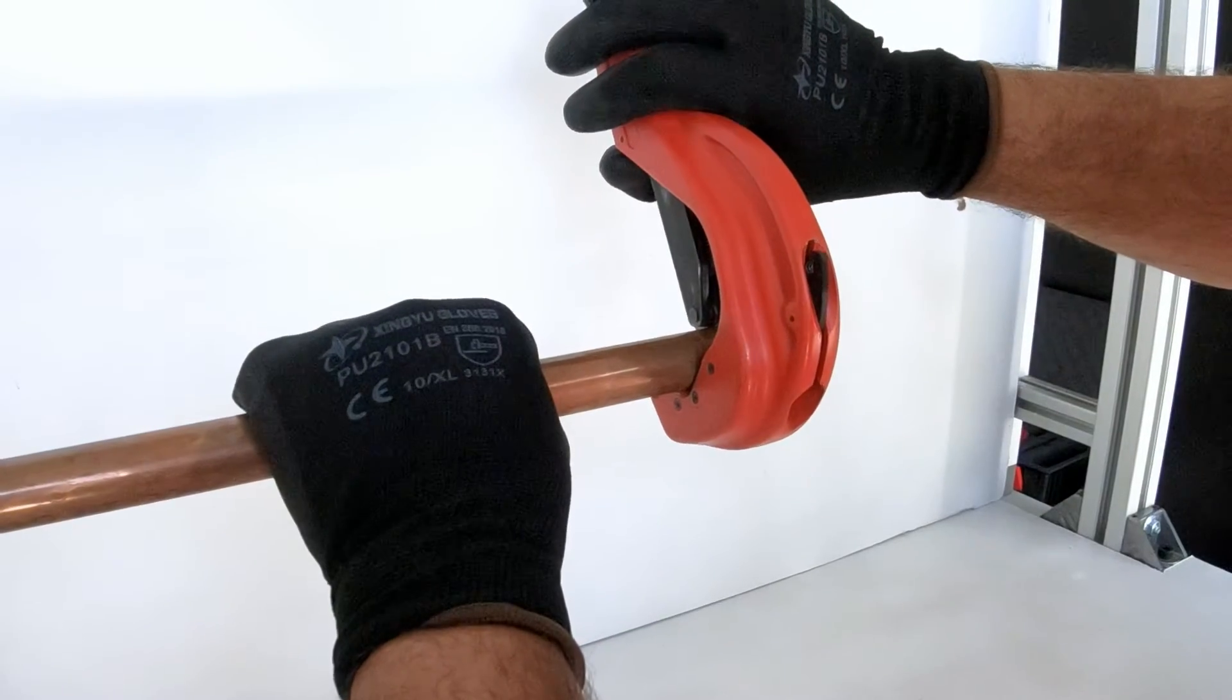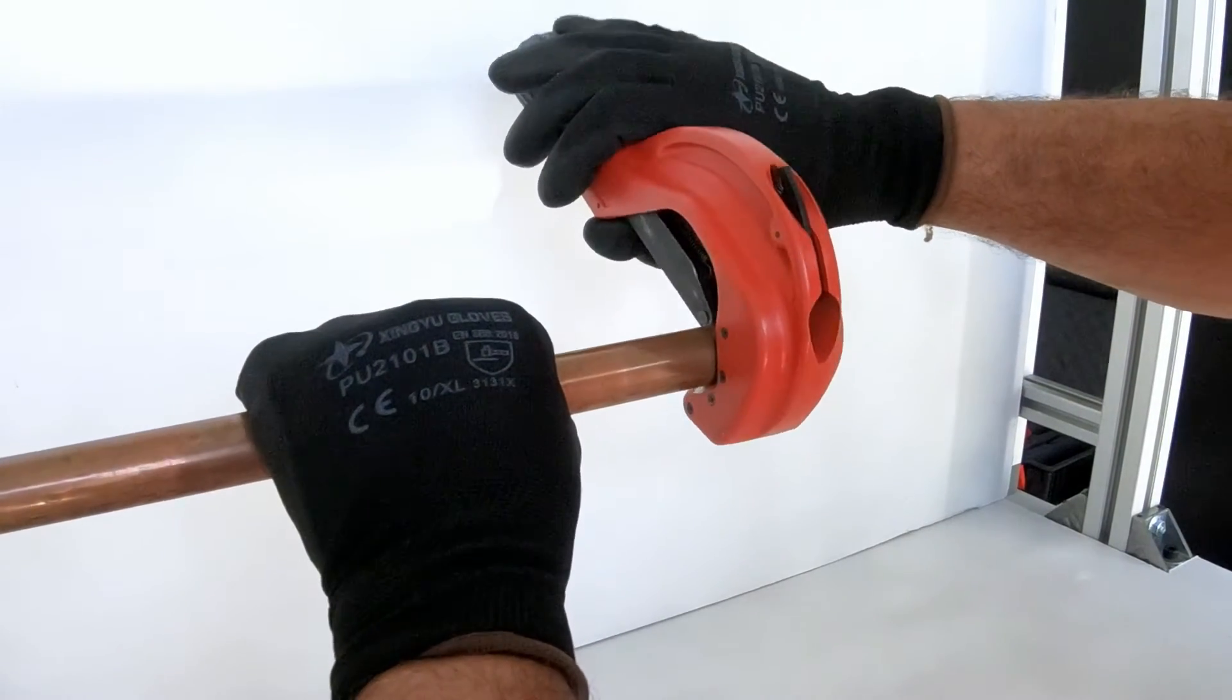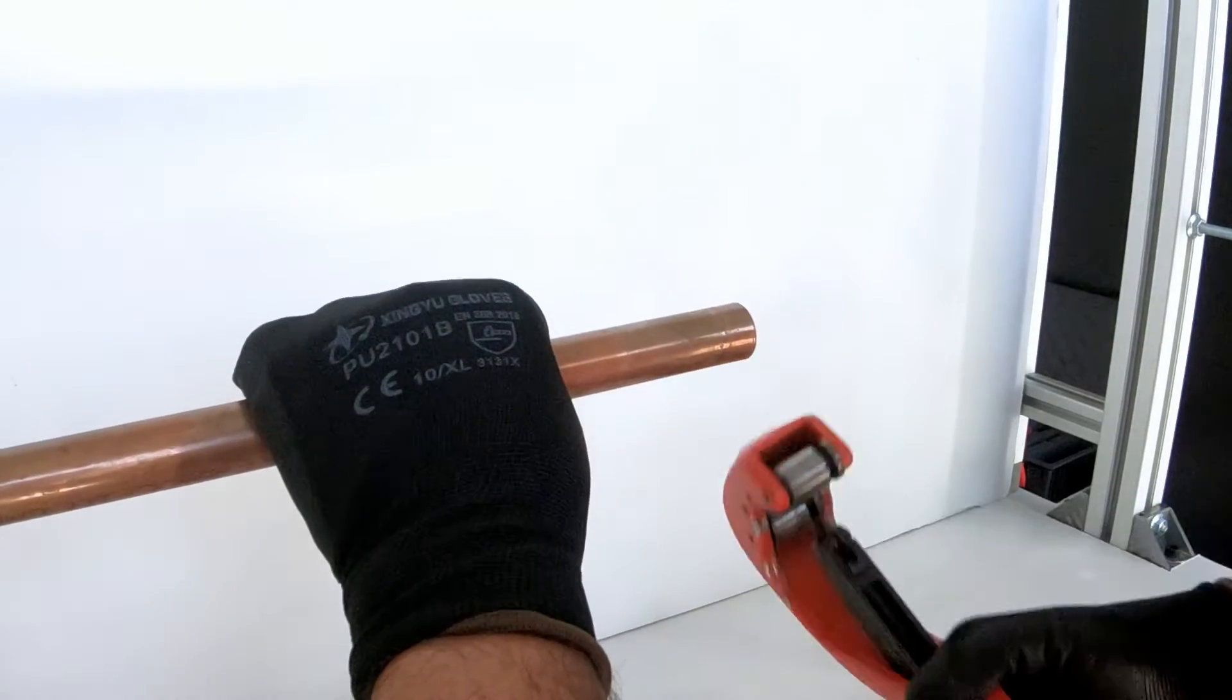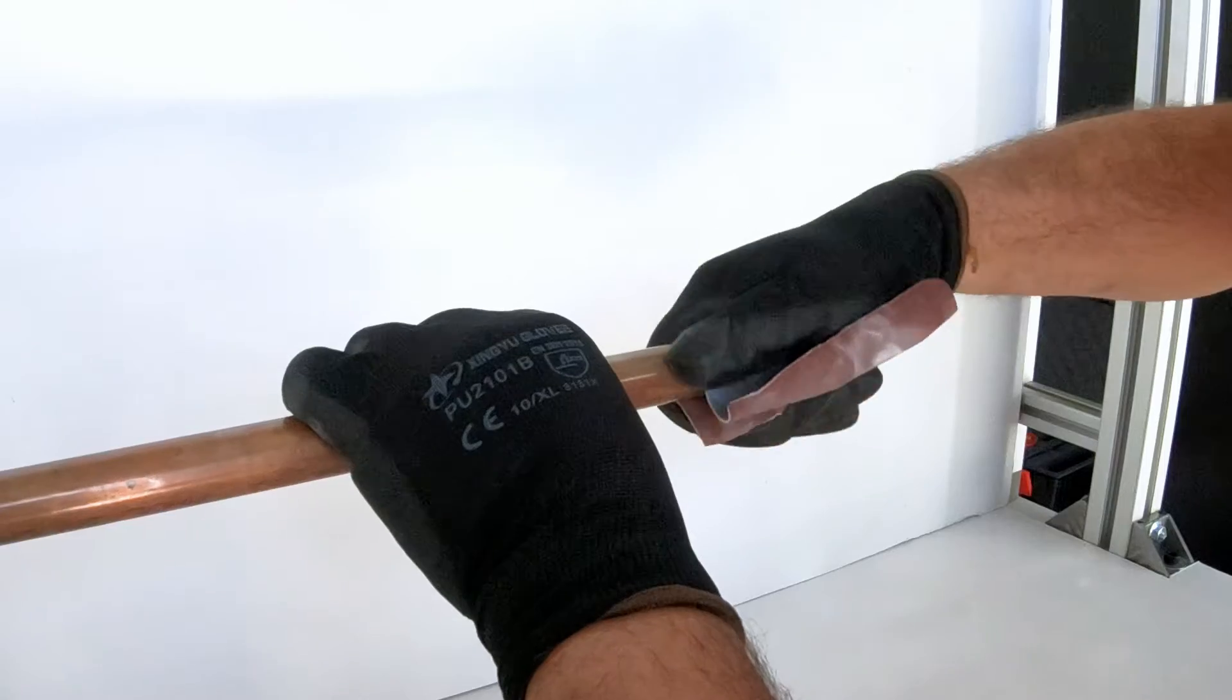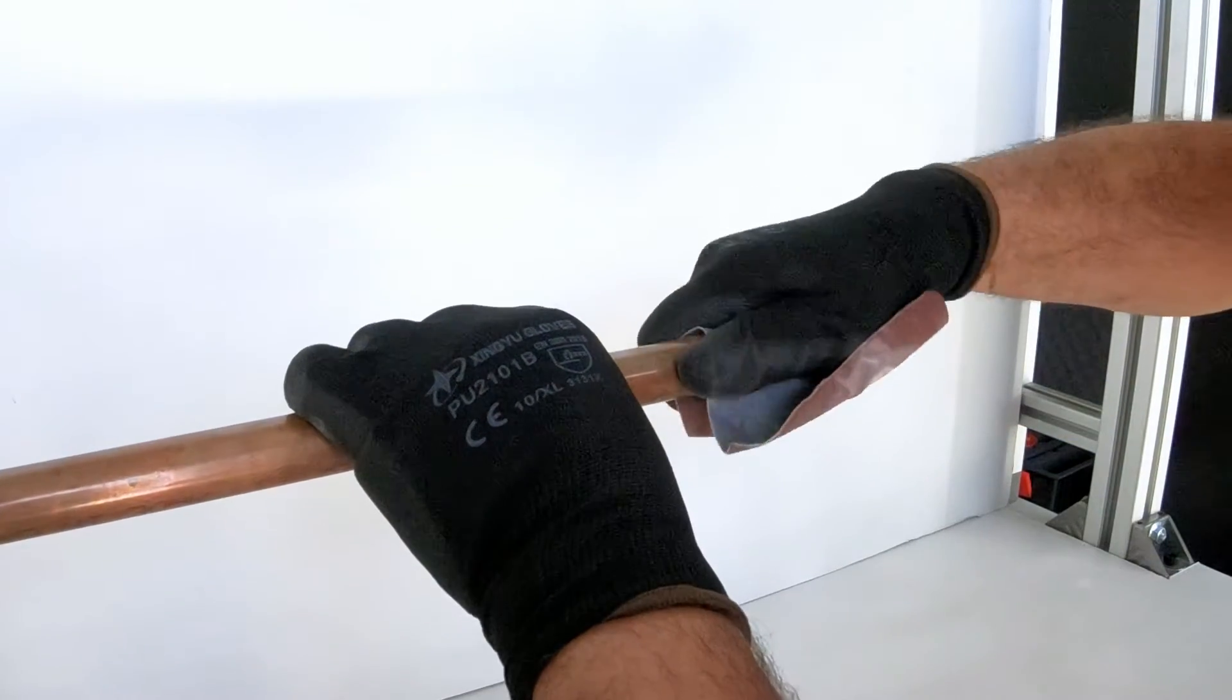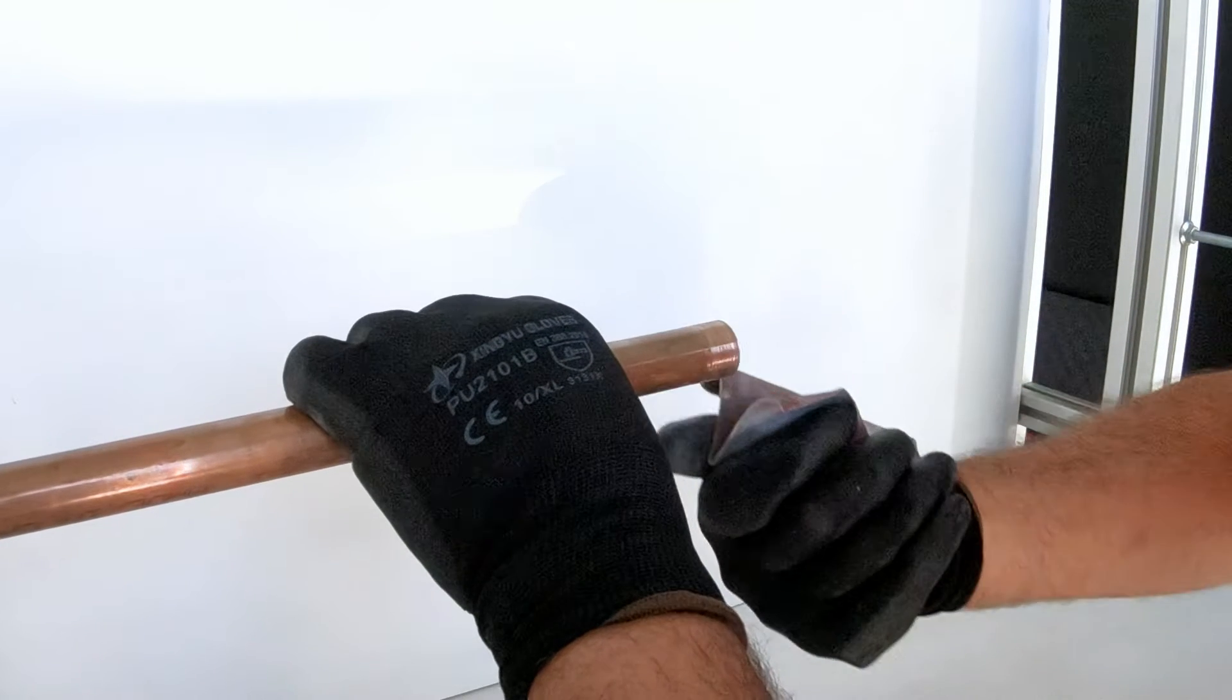Now before starting the installation, following ASTM B828 standards, properly measure and cut the pipes, ream all cut ends to remove any burrs, and clean all oxides from tube ends and valve cup surfaces. Tube ends should be lightly abraded to promote surface contact.